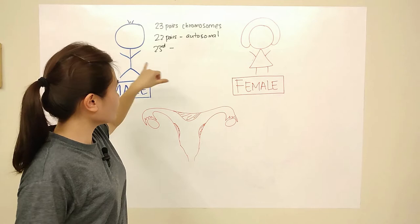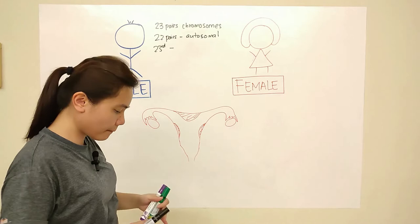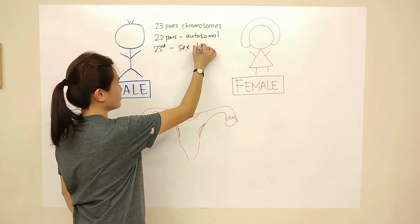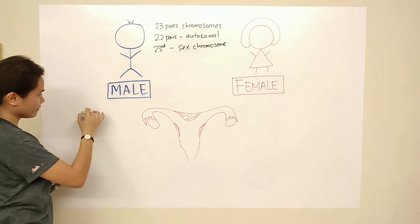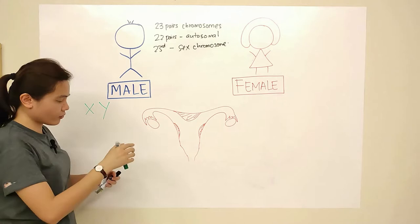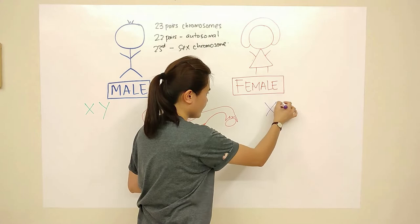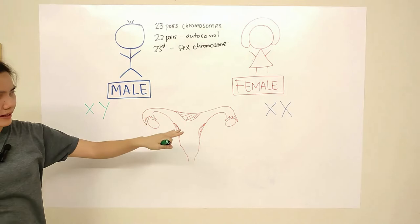What we are interested in is the 23rd pair of chromosomes, which is called the sex chromosomes. The sex chromosomes for male are XY, and for female the sex chromosomes are XX.